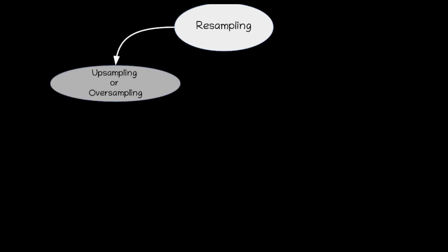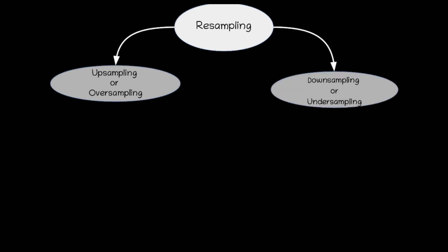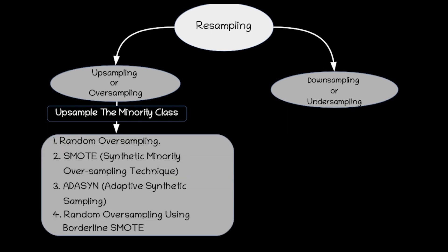There is a popular technique called resampling which is specifically used to address the problem of data imbalance. There are two main types of resampling. First is upsampling or oversampling, and the second is downsampling or undersampling. Upsampling or oversampling involves randomly duplicating existing instances or generating synthetic examples from the minority class, with the ultimate goal of creating a more balanced dataset. Some commonly used oversampling techniques are random oversampling, SMOTE (Synthetic Minority Oversampling Technique), ADASYN (Adaptive Synthetic Sampling), and borderline SMOTE.